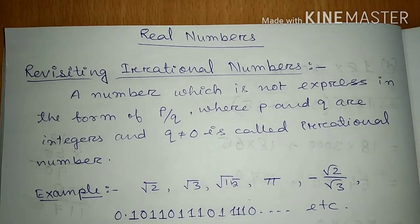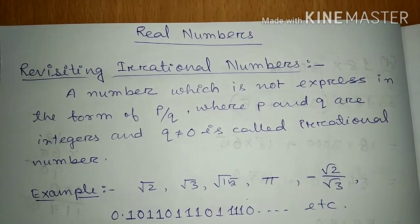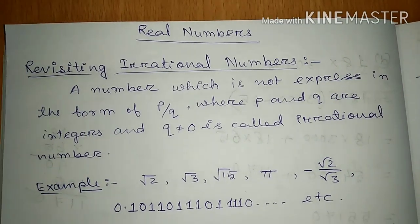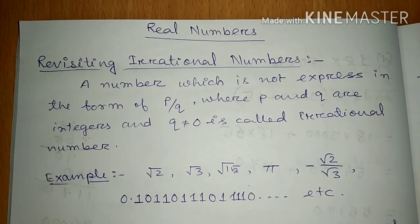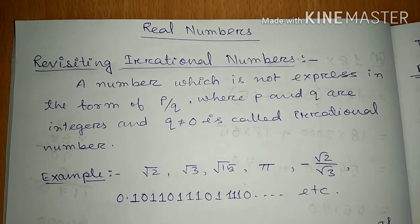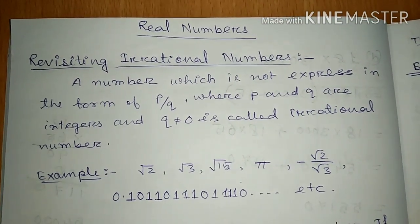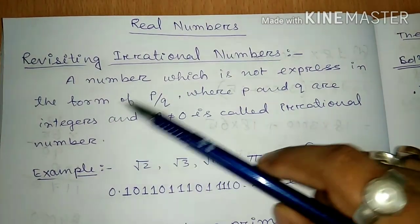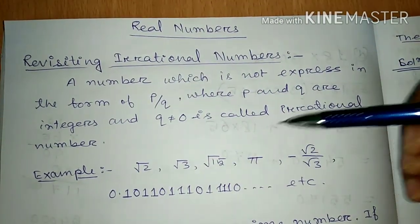First, we are revising irrational numbers. In earlier classes, up to class 9, we have already learned about rational and irrational numbers. The definition of a rational number: a number which can be expressed in the form P by Q, where P and Q are integers. If we cannot express a number in P by Q form, then it is called an irrational number — where P and Q are integers and Q is not equal to zero.